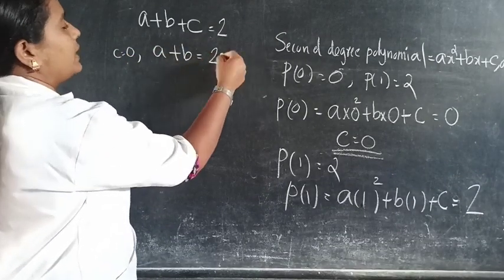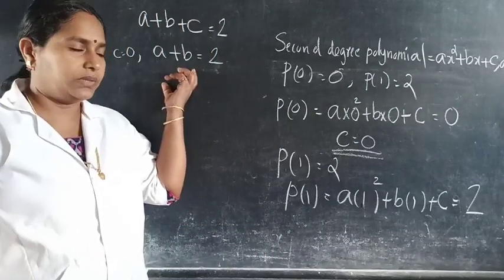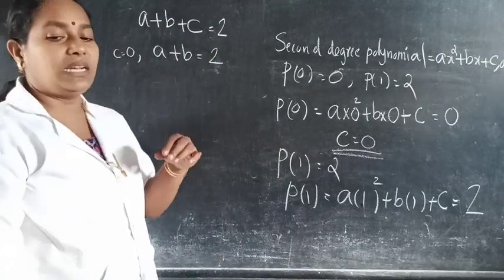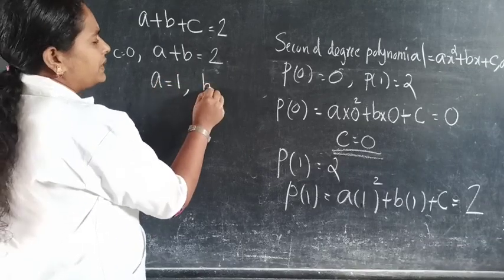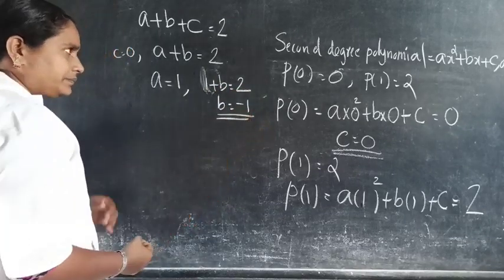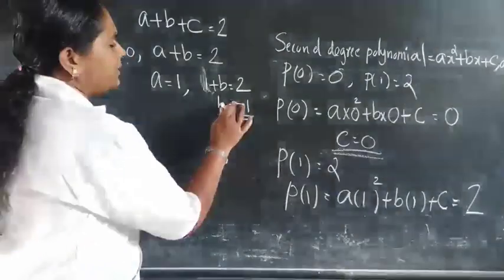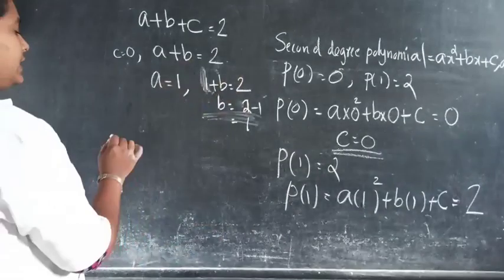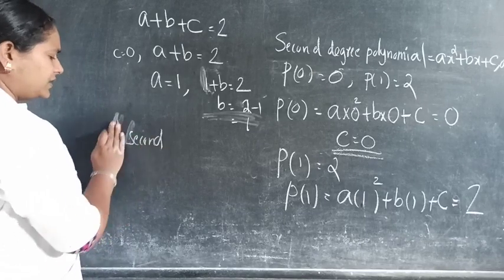We get a(1²) + b(1) + c = 2, so a plus b equals 2 (since c = 0). Then b equals 2 minus a. For the first polynomial, choose a = 1: then b equals 2 minus 1 equals 1. So the first second degree polynomial is x squared plus x.